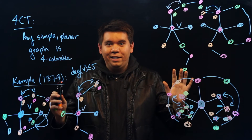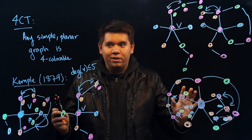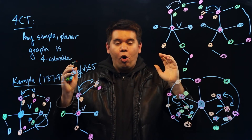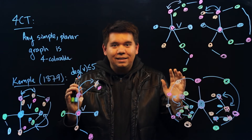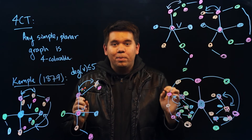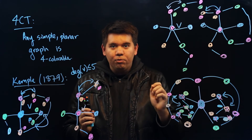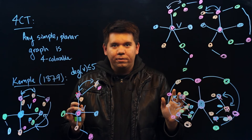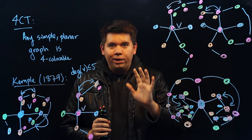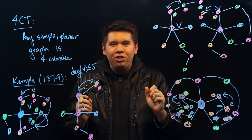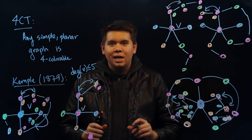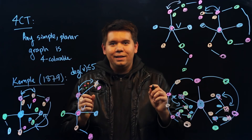Kemp thought he had proved the four-color theorem. He published this in 1879, and for over a decade, it seemed to have been settled. But then the mathematician Hayward discovered a fatal flaw in this proof. You might want to pause right now and see if you can figure out where the flaw is. Hayward gave the following counterexample.